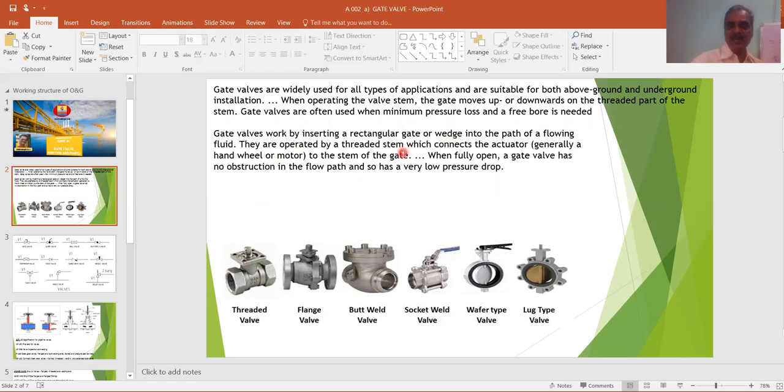Gate valve works by inserting a rectangular gate or wedge into the path of a flowing fluid. They are operated by a threaded stem. The stem connects the actuator, generally a hand wheel or motor, to the stem of the gate. When fully open, a gate valve has no obstruction in the flow path and so has a very low pressure drop.